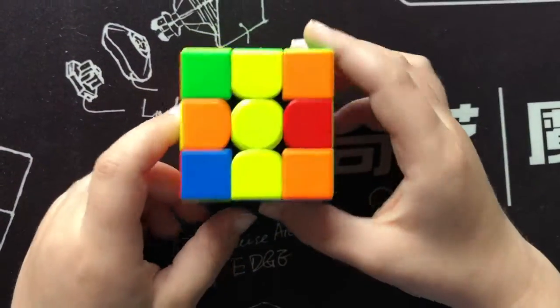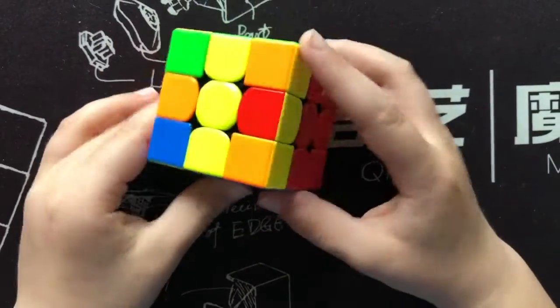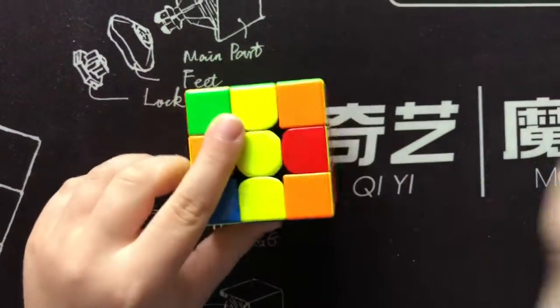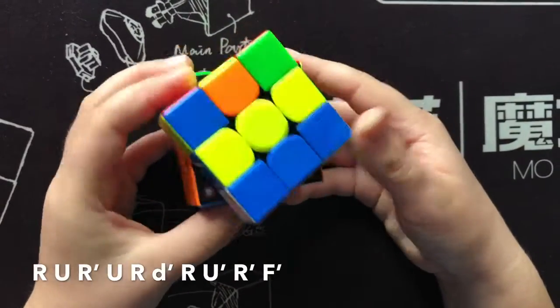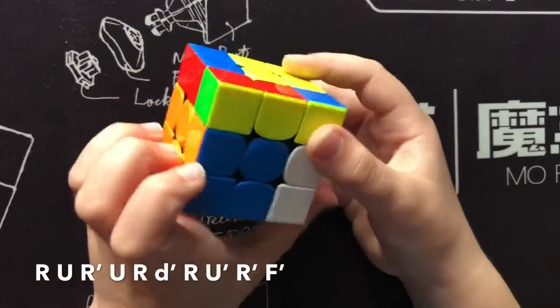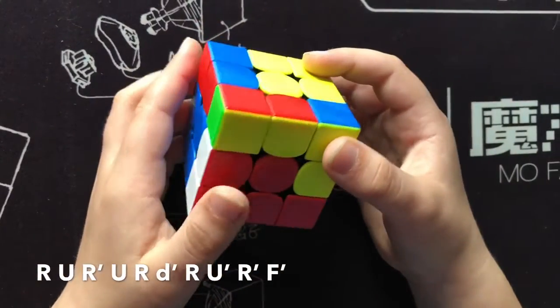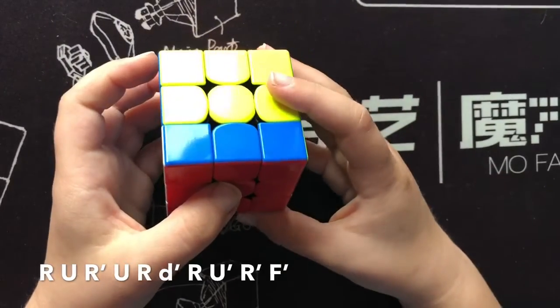It's like a broken up line. To do the case, we want to hold your line on the right side, and then you do r, u, r', u, r, d', r, u', r', f'.